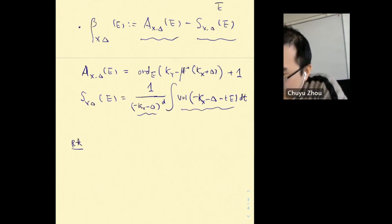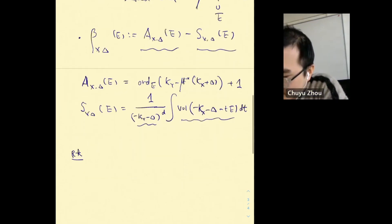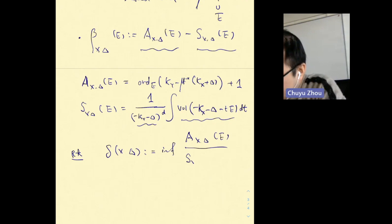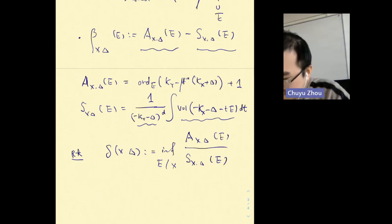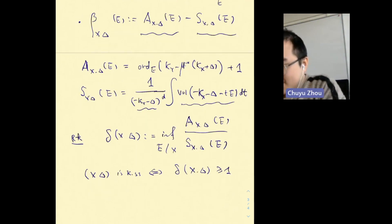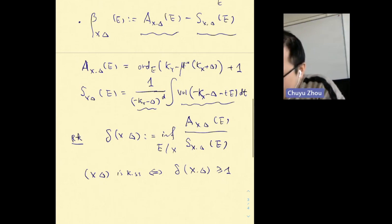Because beta is defined as a difference, we also have an invariant called delta, defined as the infimum of A/S where E runs through all prime divisors over X. Then (X, Δ) is K-semi-stable if and only if delta is greater than or equal to 1. We call delta the K-stability threshold. This is the basic invariant of K-stability for Fano varieties.